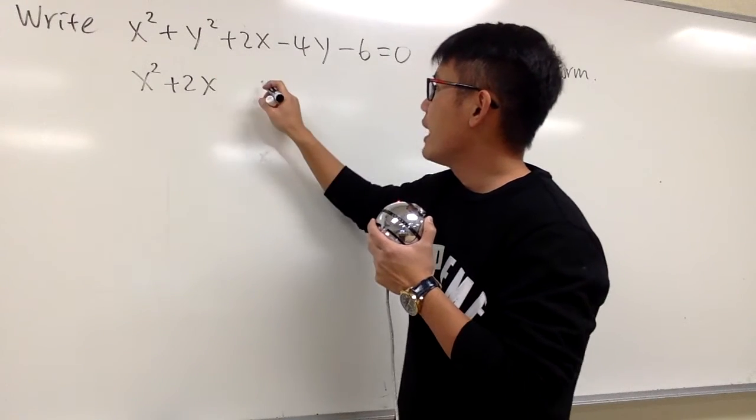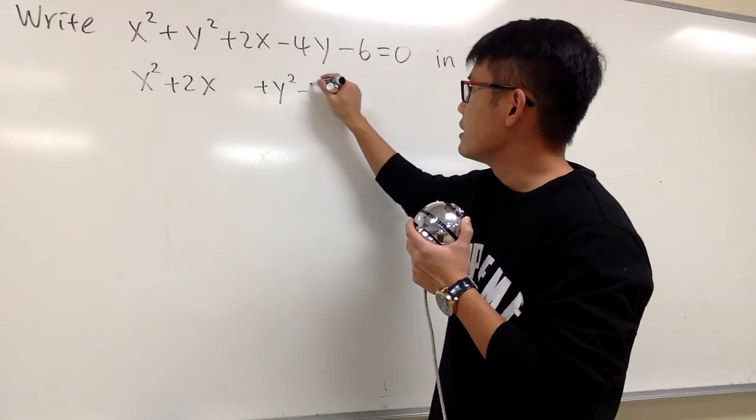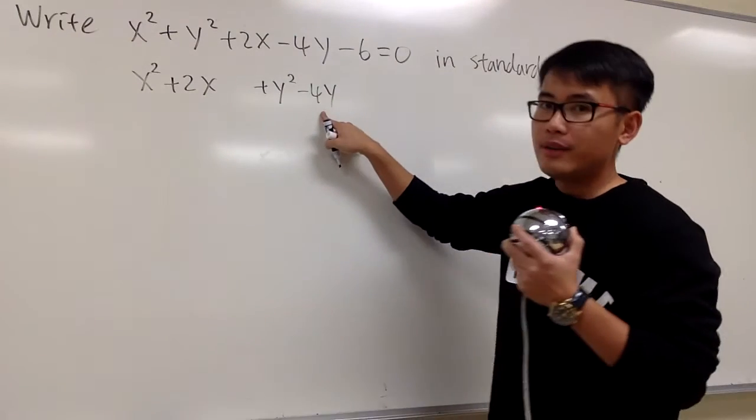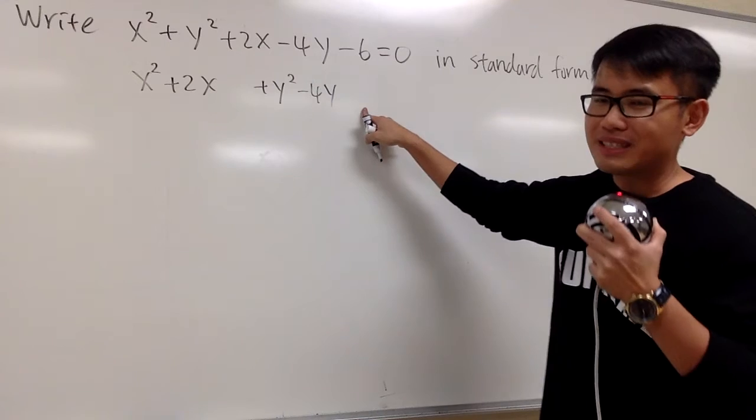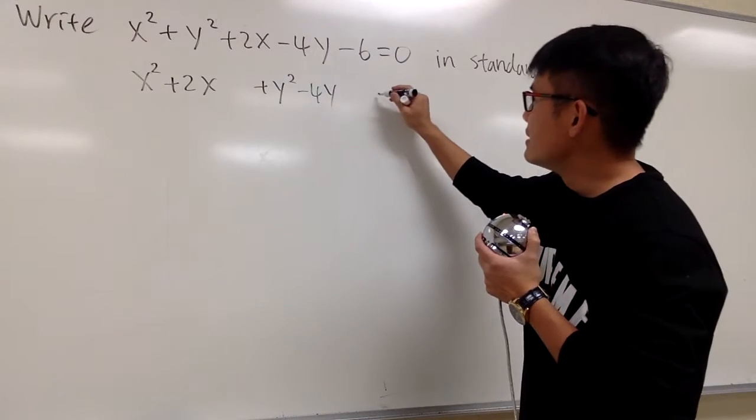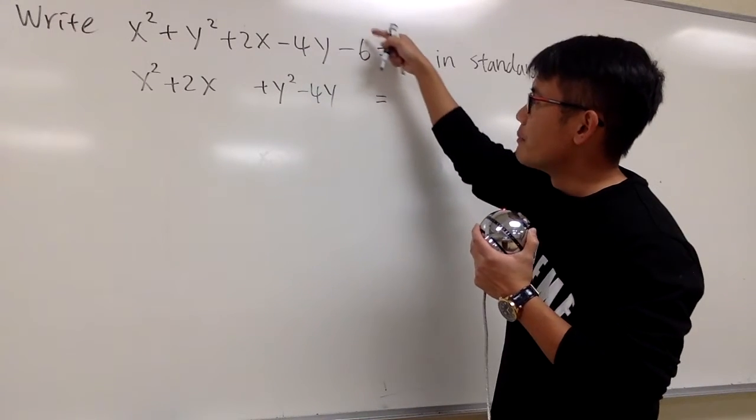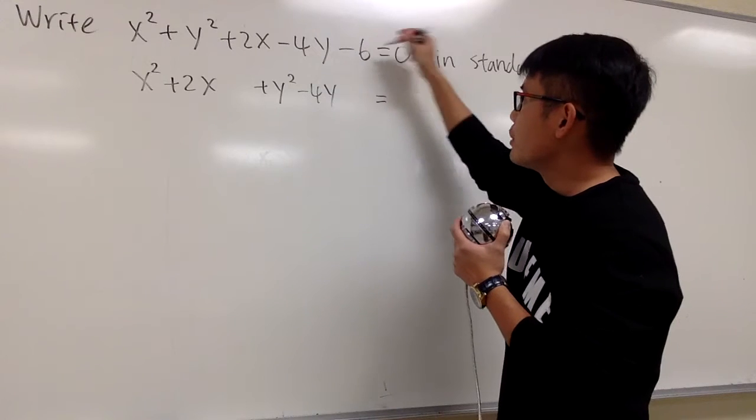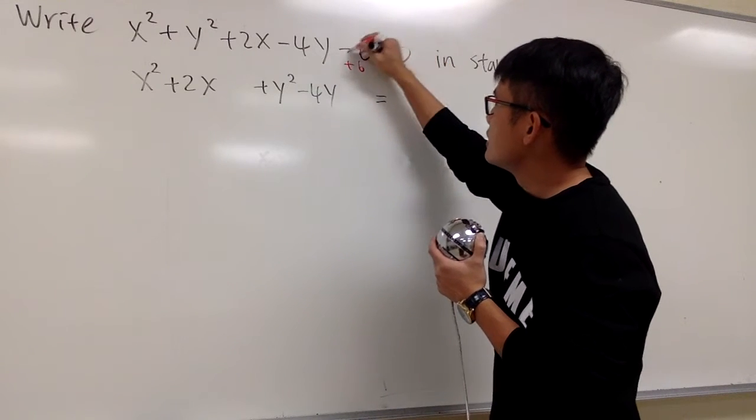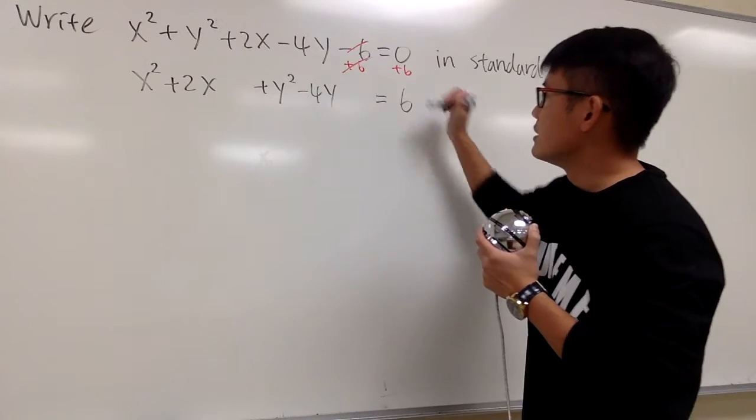And let's bring down plus y squared, and put the minus 4y here, and also leave a space for the special someone. And this is equal to, you see we have the minus 6 right here, right? But then bring the number to the right-hand side. Let's add the 6 on both sides. So 0 plus 6 is 6.